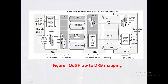DRB IDs (1, 2, 3, etc.) are unique identifiers for each DRB. In DRB mapping, QoS flows are mapped into DRBs based on their QoS characteristics. Radio resource control (RRC) manages the DRB configuration and QoS flow mapping. The mapping process ensures that each QoS flow receives the required radio resources and prioritization, guaranteeing predictable performance and QoS. By dynamically allocating DRBs to QoS flows, the 5G network optimizes resource utilization, reduces latency, and enhances user experience. Key aspects include one-to-one or one-to-N QoS flow to DRB mapping, dynamic mapping based on QoS characteristics, and RRC managing mapping and DRB configuration.